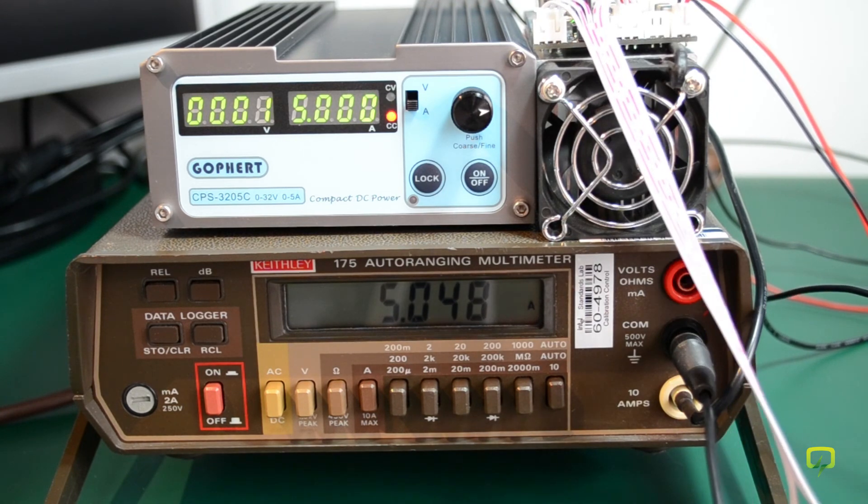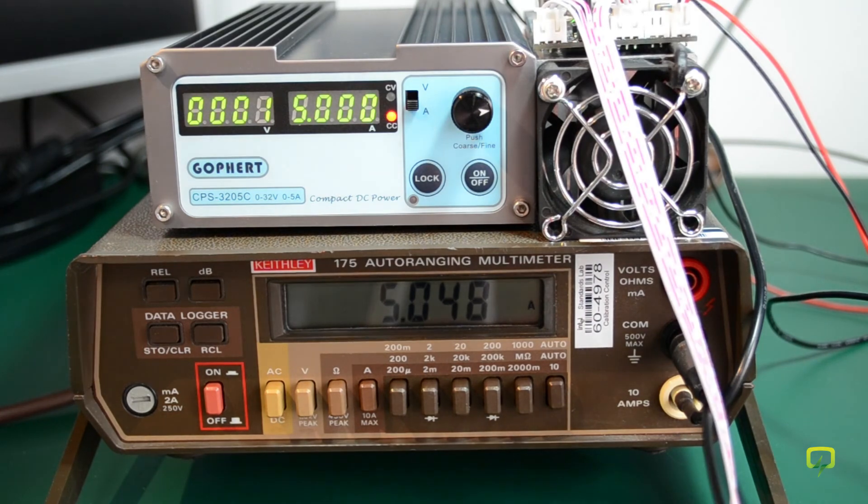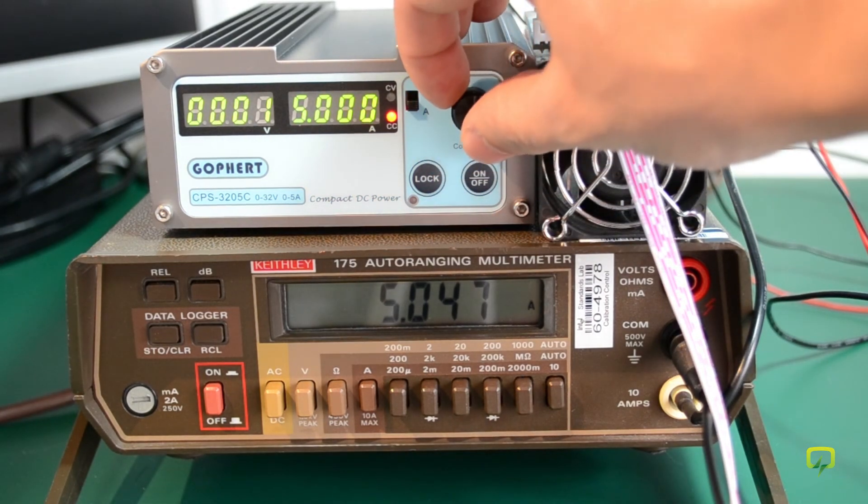Okay. So the power supply is once again in constant current mode, and I need to adjust for 5.00 amps.